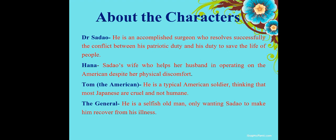Now let's know about the characters. Dr. Sadao is an accomplished surgeon who resolved the conflict between his patriotic duty and his duty to save lives. Hana is Sadao's wife, who helps her husband in operating on the American despite her physical discomfort. Tom is a typical American soldier who thinks most Japanese are cruel and not human. The General is a selfish old man who only wants Sadao to help him recover from his illness.